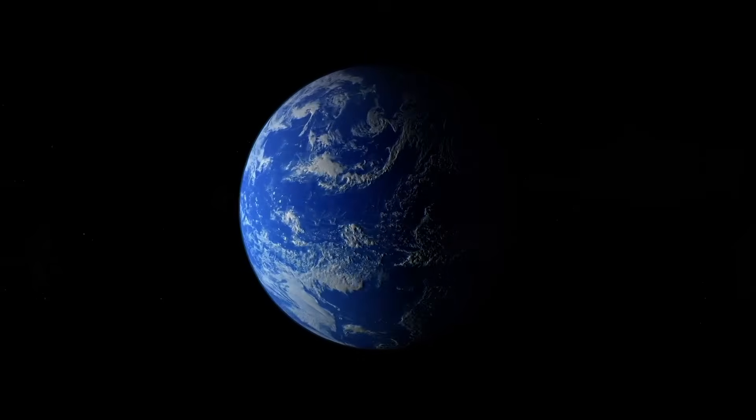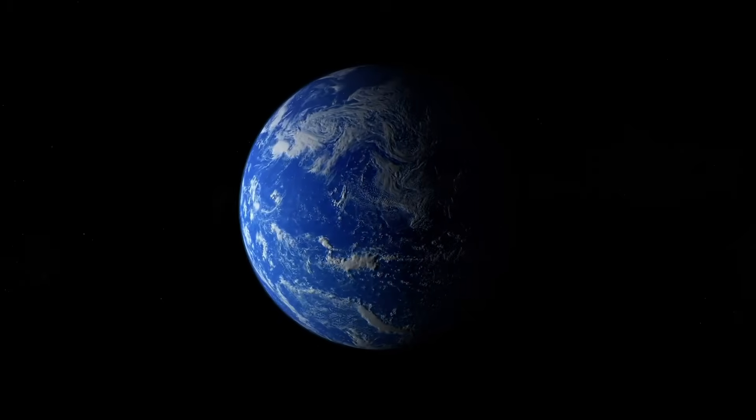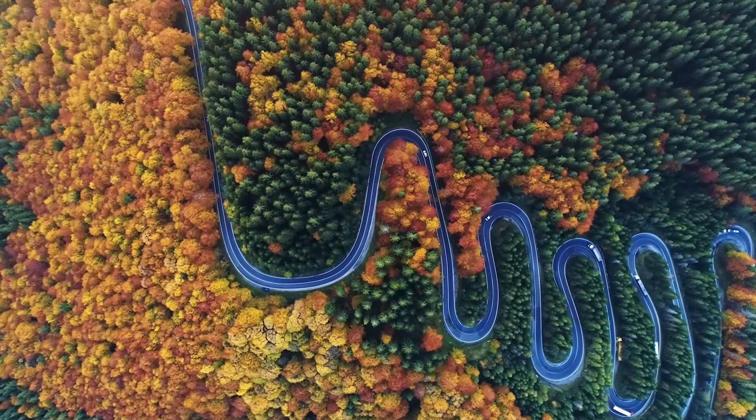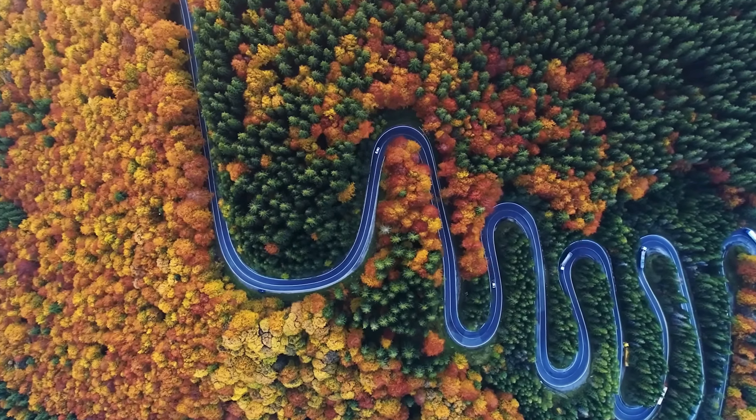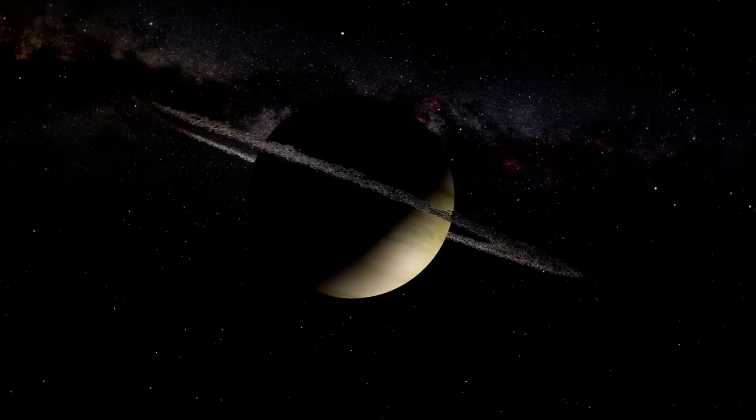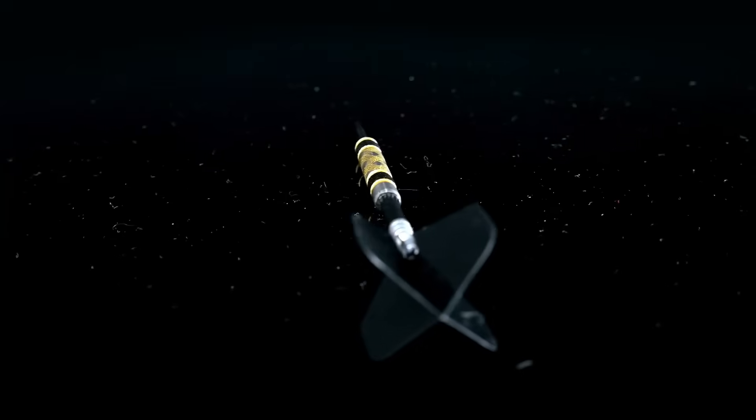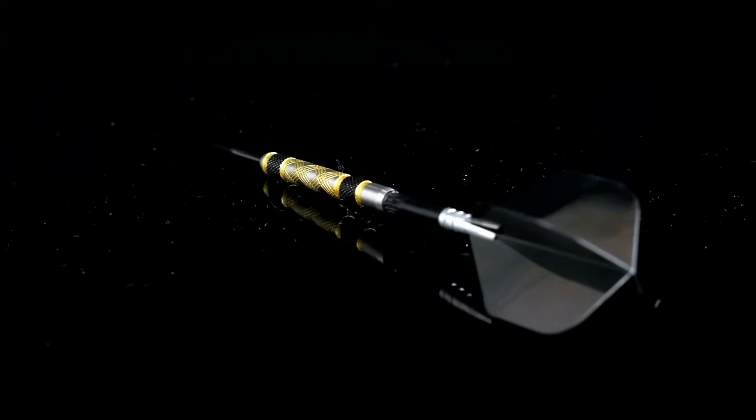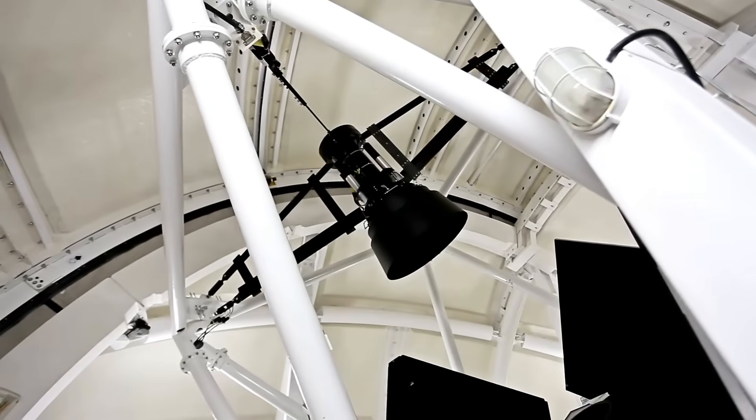For starters, a single day on this intriguing exoplanet lasts a staggering eleven Earth days. Imagine sunrises that not only herald a new day but unfold slowly, resisting giving way to midday, and sunsets that stretch out too long, creating golden hours that photographers dream about. While it sounds idyllic, it also has significant implications for its climate and habitability.